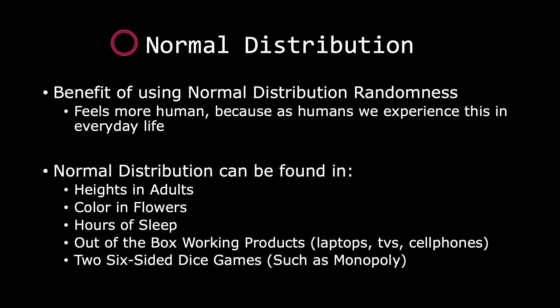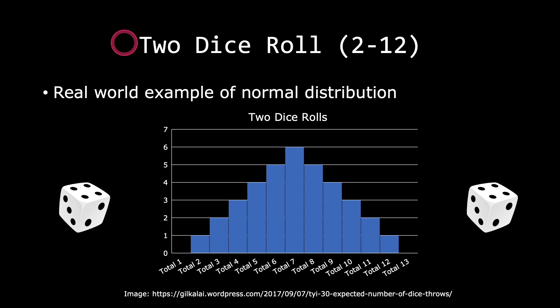We also have quality control in products we purchase — laptops, TVs, cell phones. And we have games such as Monopoly, which use two six-sided dice. When using two six-sided dice, the possibilities fit a normal distribution. Let's take a look at the example of two six-sided dice.